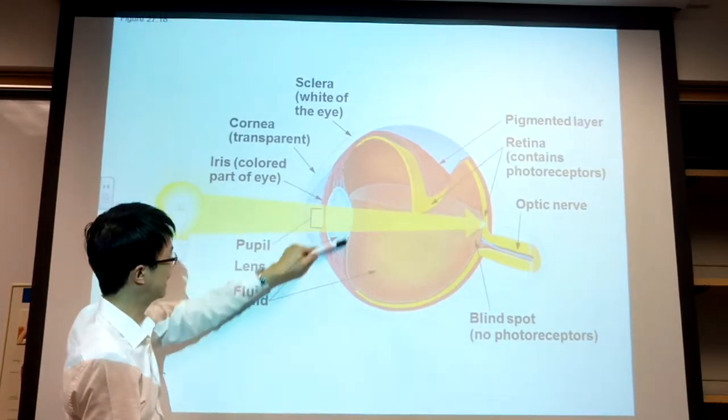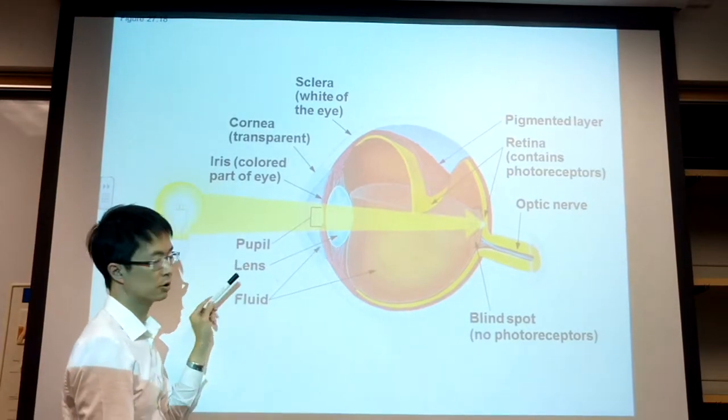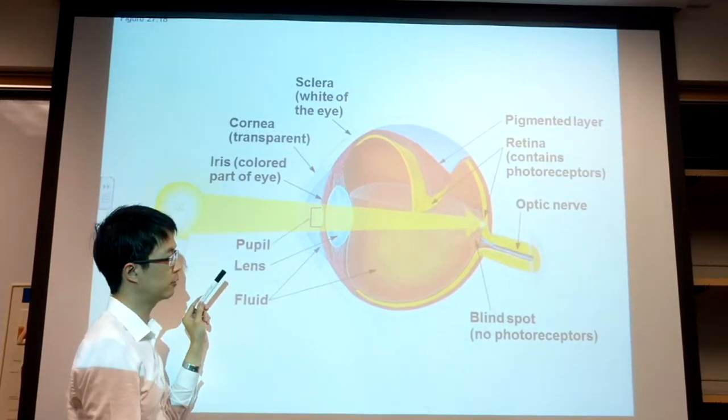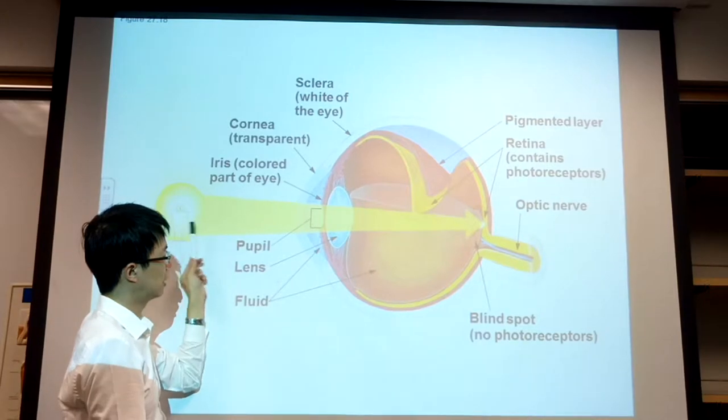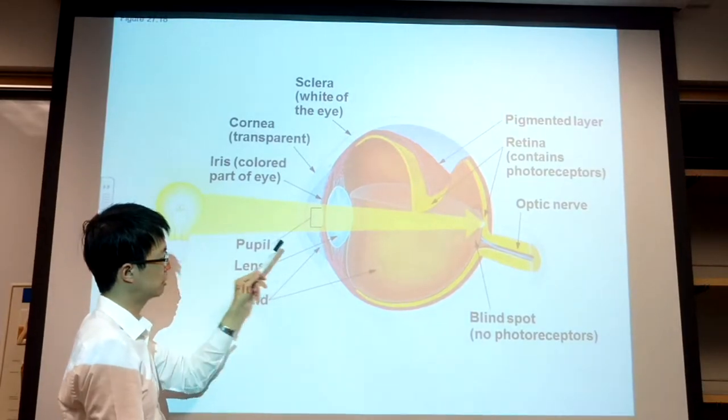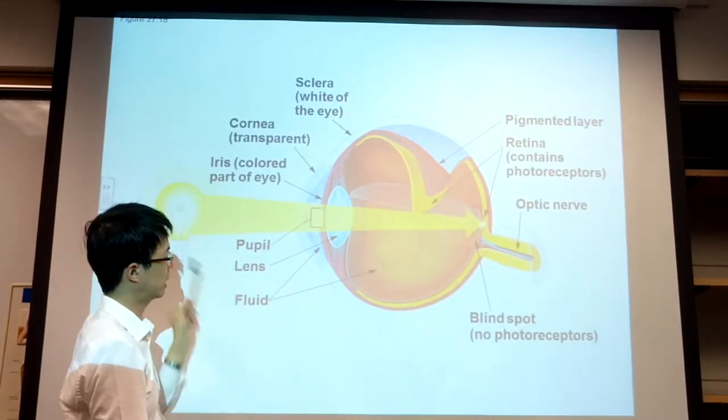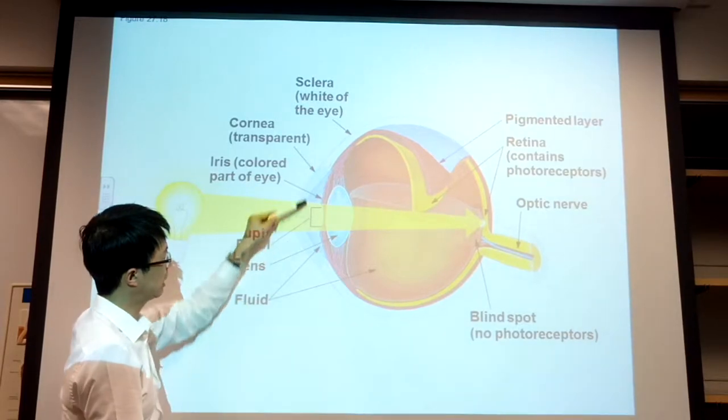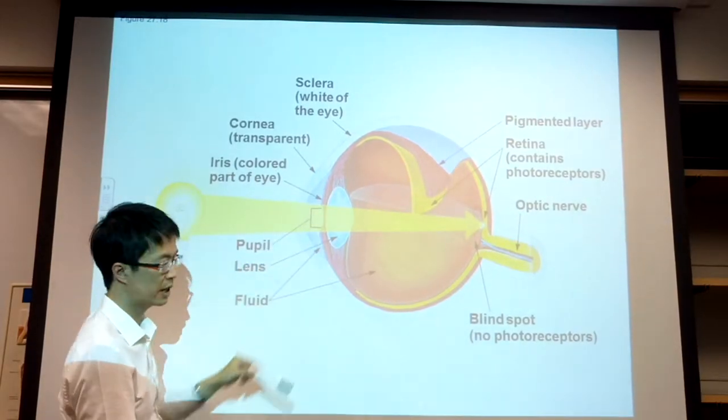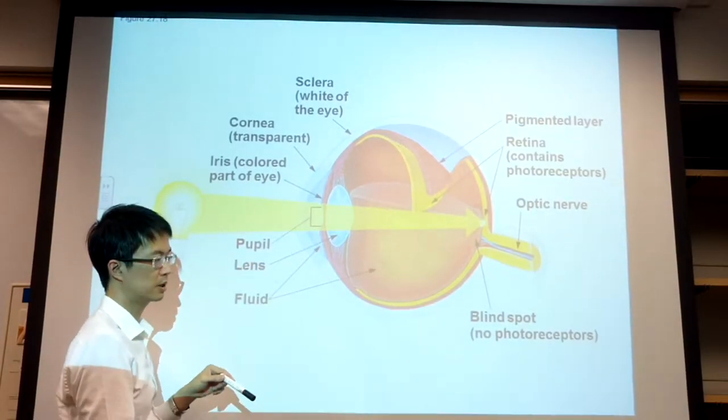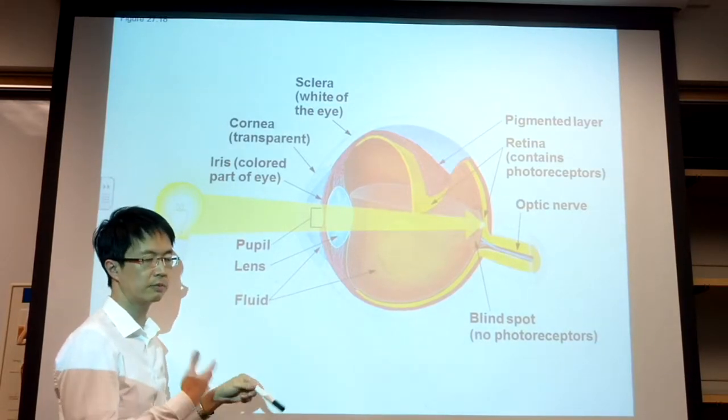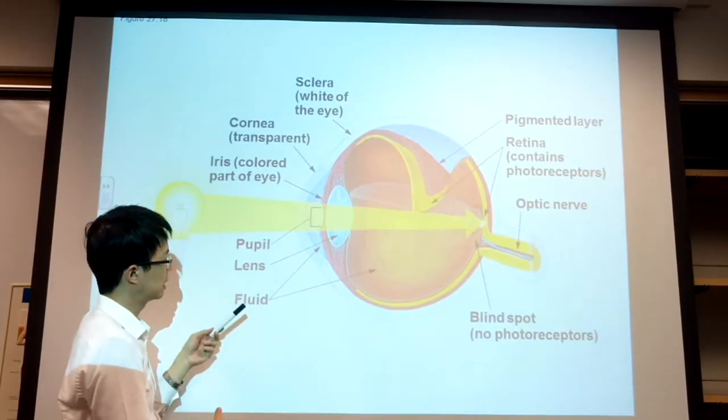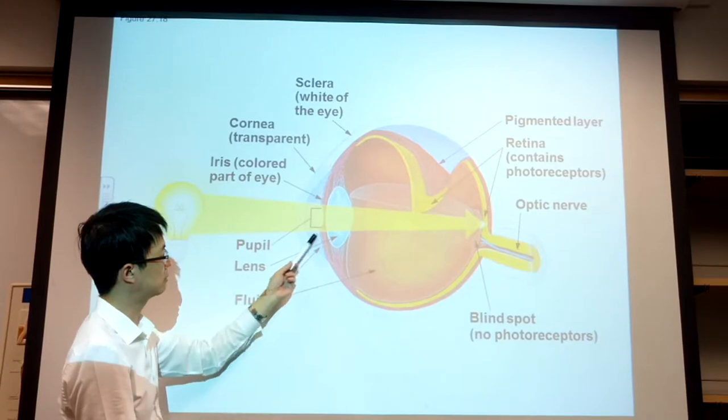After the iris, the light will hit the lens. The lens is the one that will focus the light on the object, whether it is close to your eyeball or away from the eyeball. Then you have a fluid we call humor. Humor doesn't mean it is funny; humor means it is a body fluid in these two compartments.